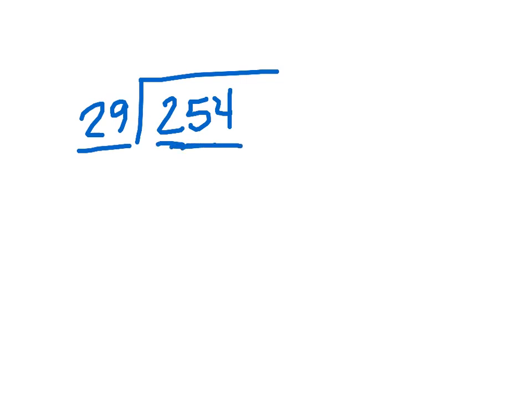Let's try another one and see what happens when our estimating is a little off. Let's say 254. We're going to divide that by 29. Okay, so 29. Does it go into 2? No. Does it go into 25? No.